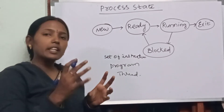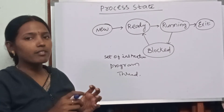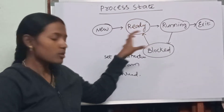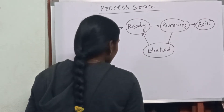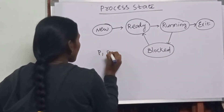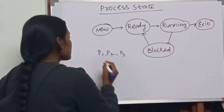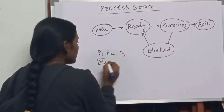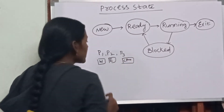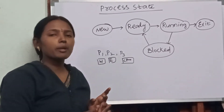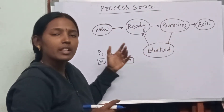When a process is entering into the system, that means into the operating system, it may change states. So what are the states we have in the process state diagram? Consider there are three processes: P1, P2, and P3. I am doing three tasks in my computer — opening Word, opening Excel, and writing a C program. These are three different processes to be executed by the operating system.